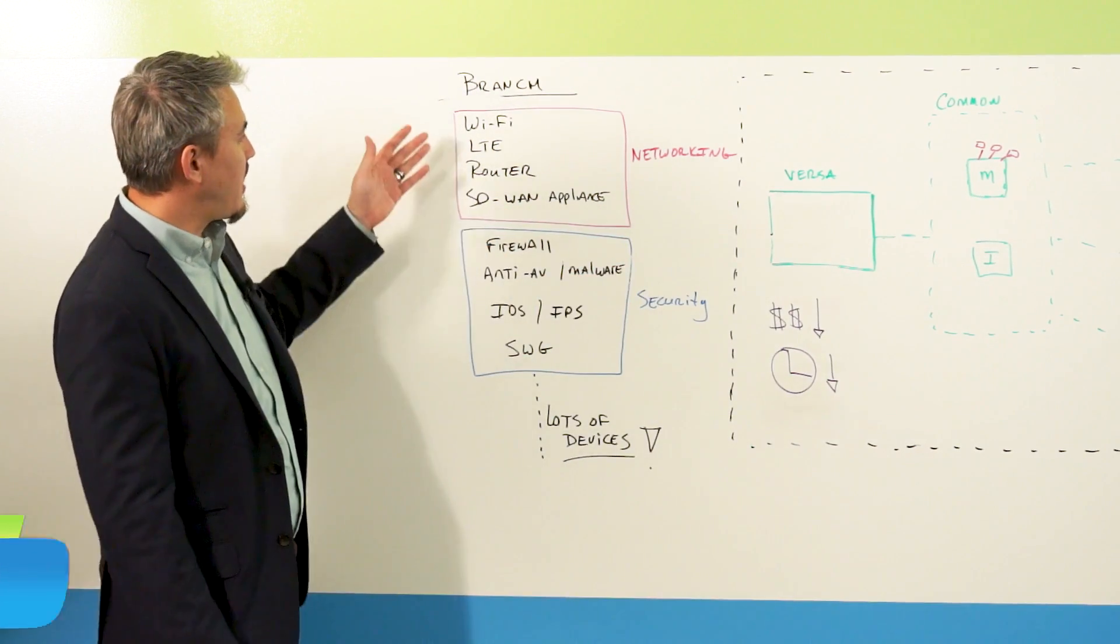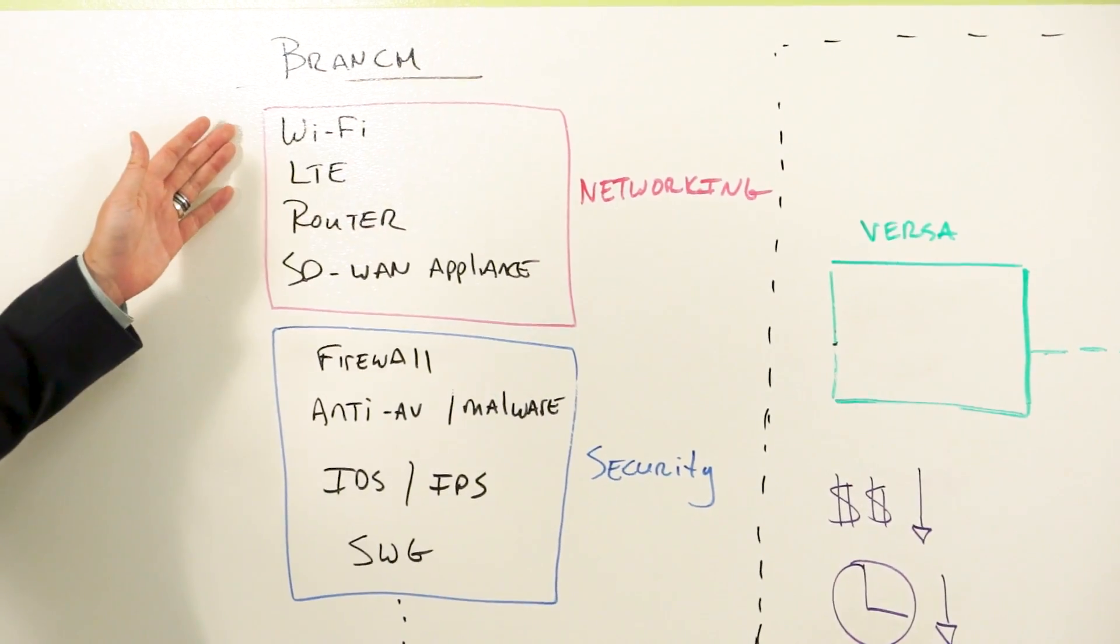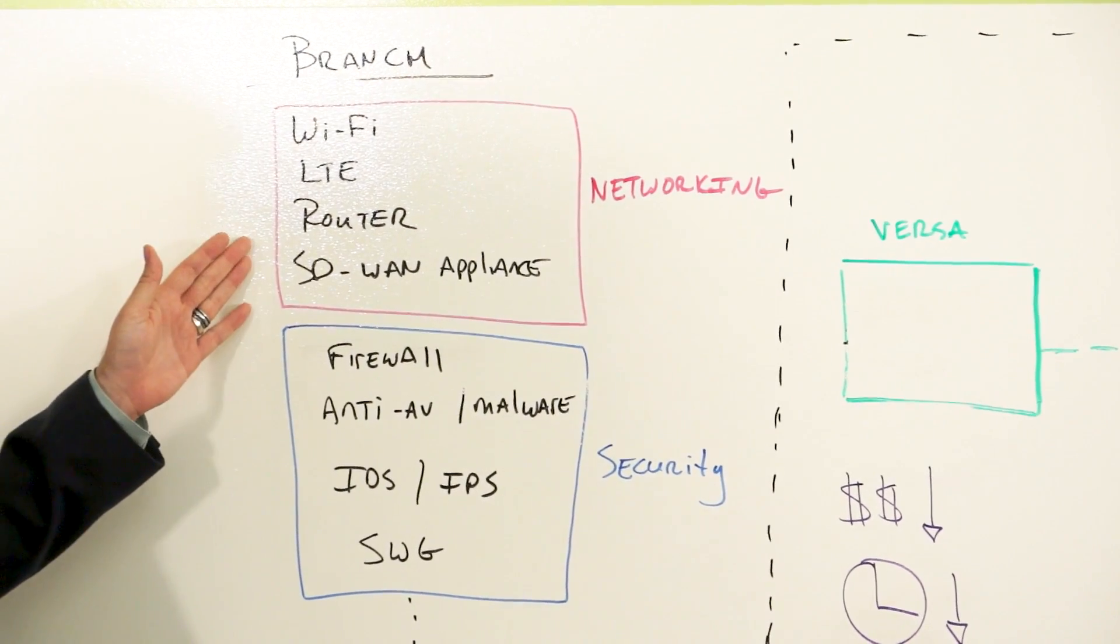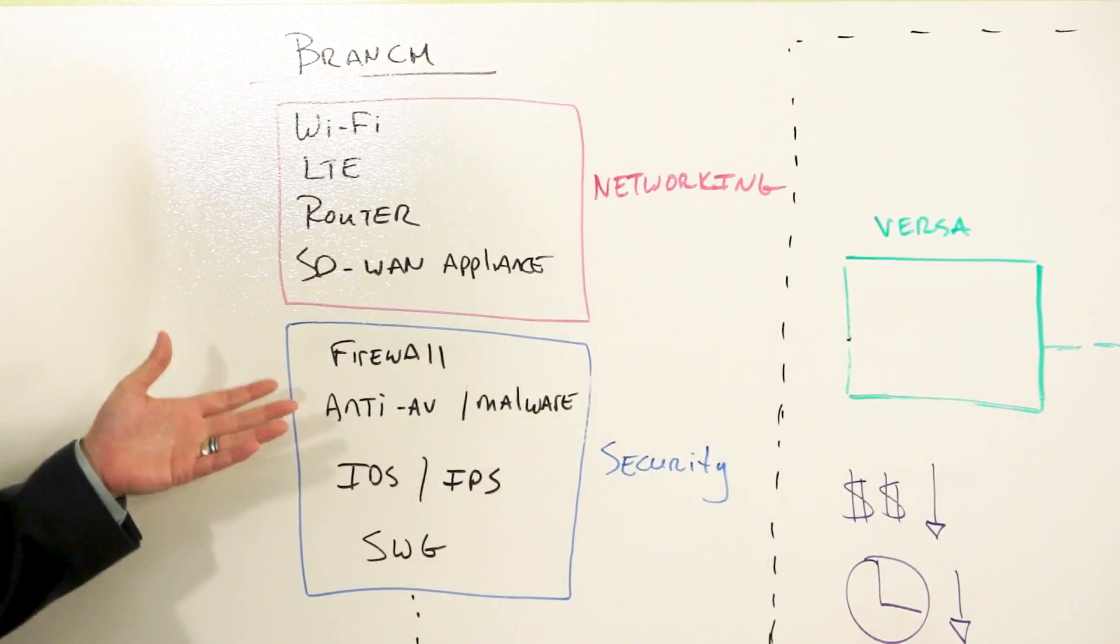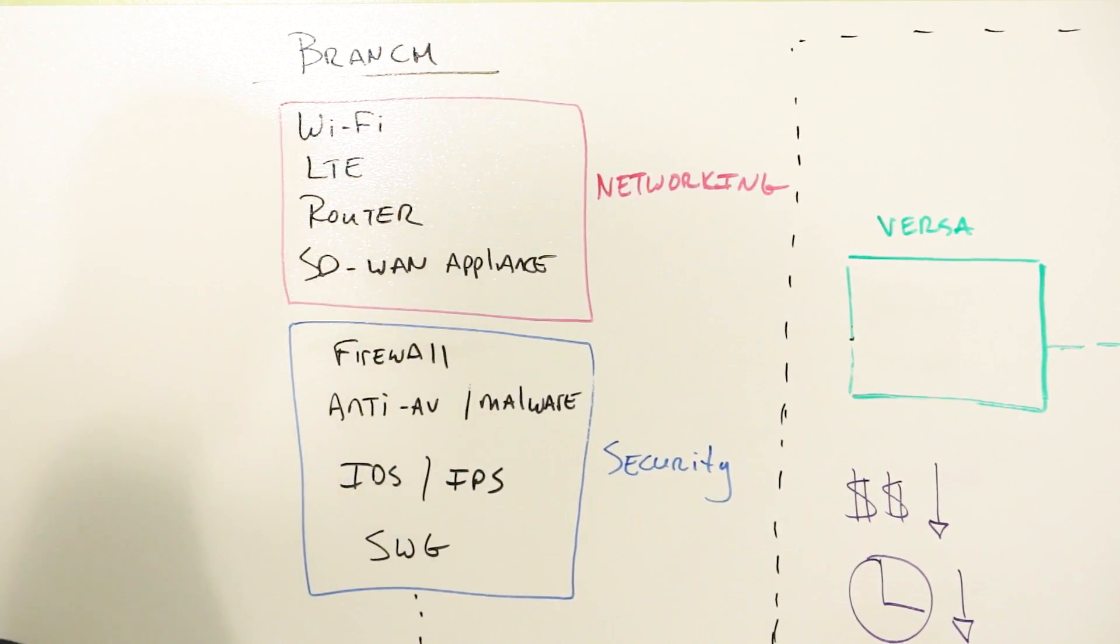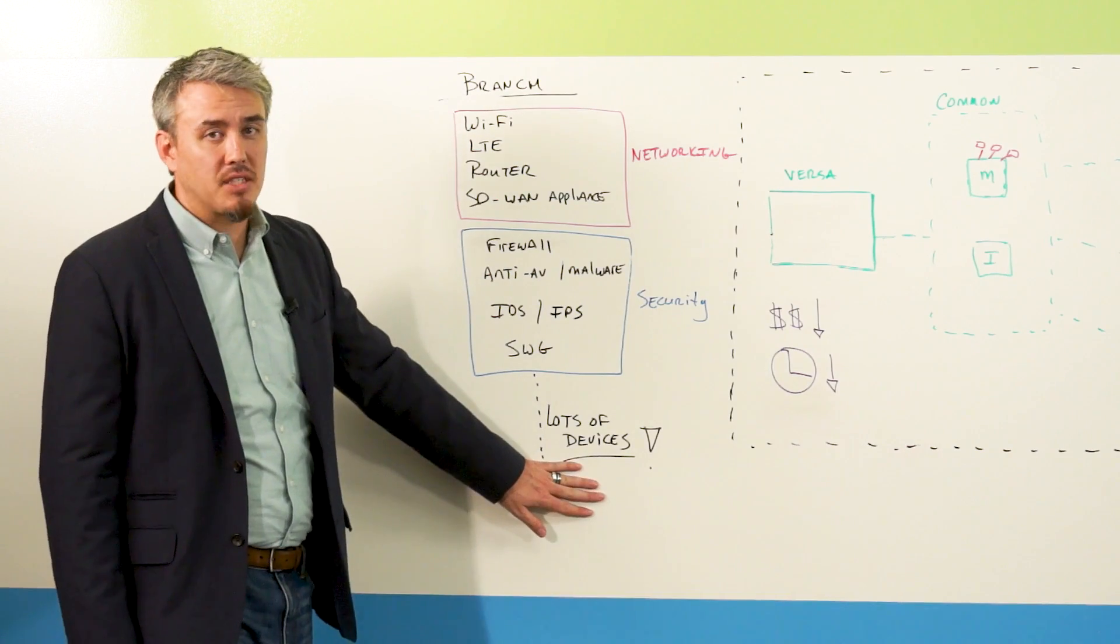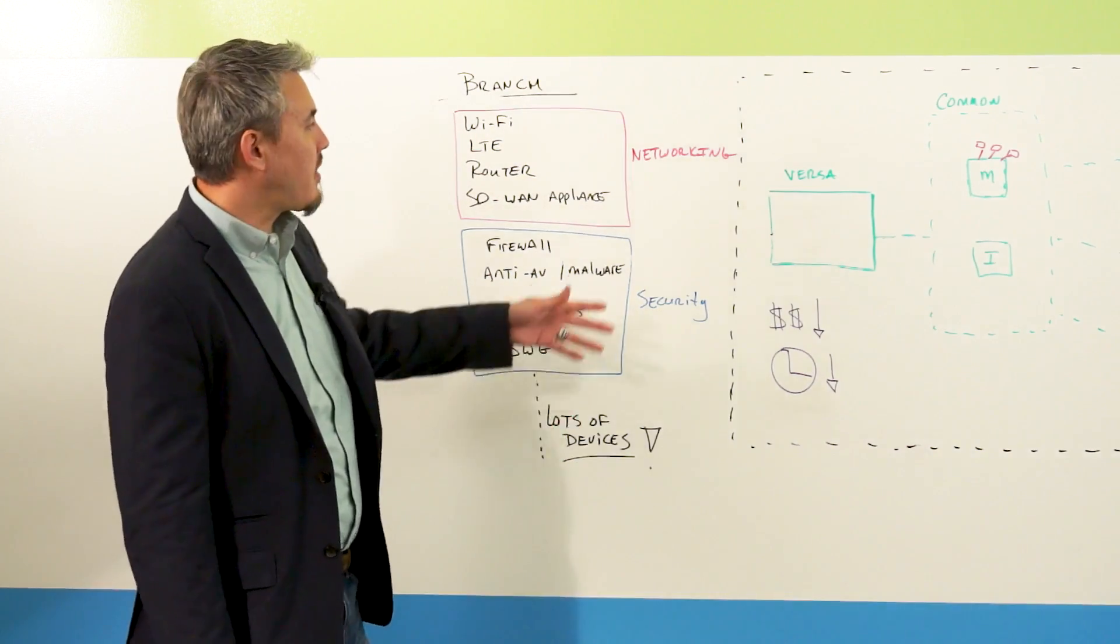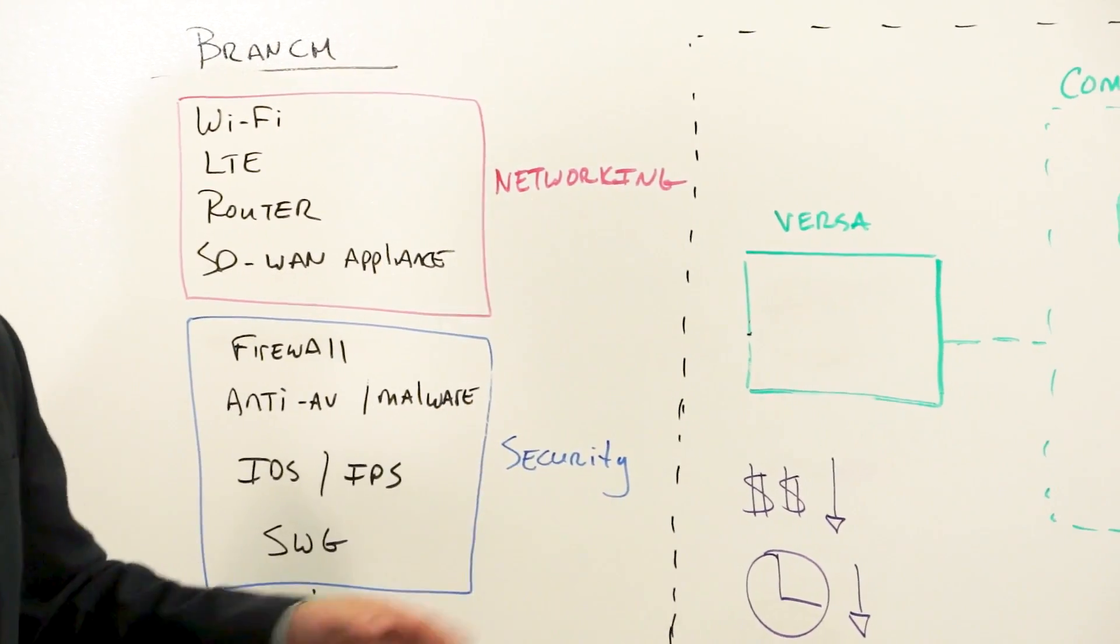We have networking and security. You've got a variety of different connectivity appliances, router, SD-WAN appliance. You have a firewall, anti-AV, malware, IDS, IPS, SWG, secure web gateway. Net-net, you've got a lot of stuff that's actually in the branch today. But most of them, they're categorized into two things: networking and security.